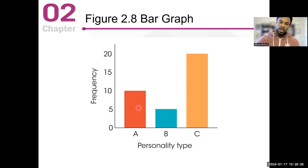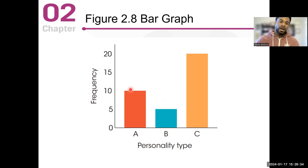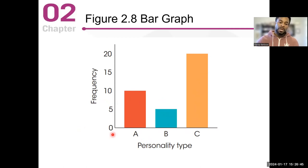Here's a bar graph for personality type. You have personality type A, B, C — 10 people had personality type A, five people had B, and 20 people had personality type C. There is no particular order; these are just categories of the frequency count, shown on the left-hand side.